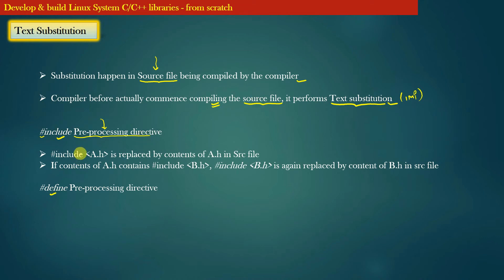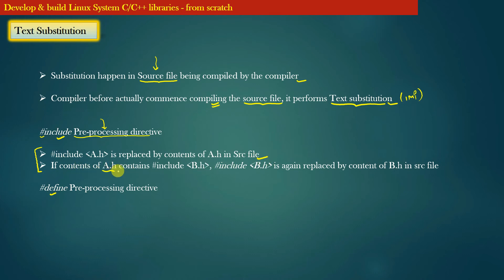The #include pre-processing directive is used to include a header file in the source file. If your source file contains a statement like #include a.h, then that statement is replaced by the contents of the a.h header file. Similarly, if the contents of a.h in turn contain another #include statement, that nested #include is again replaced by the content of the corresponding header file in that source file.